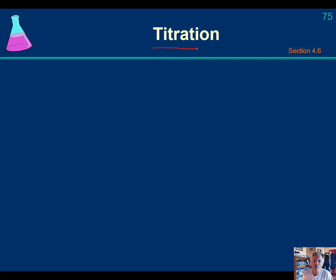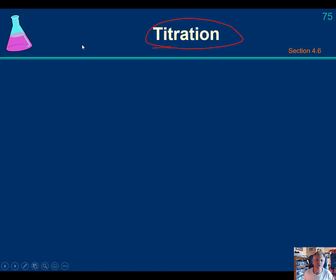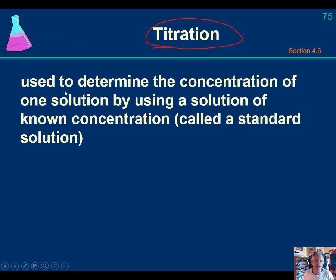Now we come to titrations. A titration is an analytical technique. Let's say we wanted to know the concentration of a solution we didn't already know. It's a technique — a way to measure that concentration. It's used to determine the concentration of one unknown solution by using a solution of known concentration, which we call a standard. It's essentially our ruler, our measuring device — just a solution of known concentration.